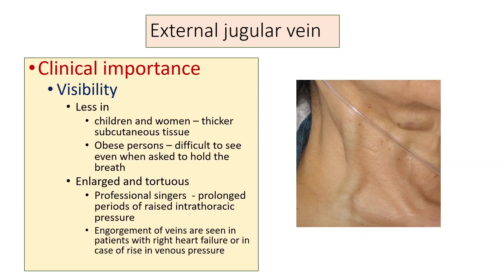Coming to the applied anatomy: the visibility of this vein is less in children and in women as the subcutaneous tissue is thicker. In obese persons, it is difficult to see the vein even when asking the person to hold their breath. In thin individuals, asking them to hold their breath makes the external jugular vein visible.